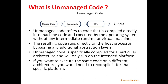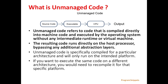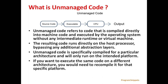Next, we will see what is unmanaged code. Unmanaged code refers to code that is compiled directly into machine code and executed by the operating system without any intermediate runtime or virtual machine. The resulting code runs directly on the host processor, which bypasses any additional abstraction layers. Unmanaged code is specifically compiled for a particular architecture and will only run on the intended platform. If a user wants to execute the same code on a different architecture, they would need to recompile it for that specific platform.